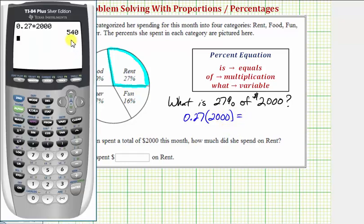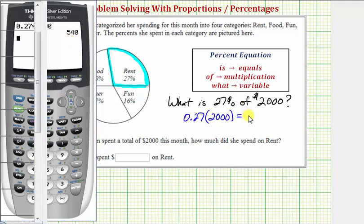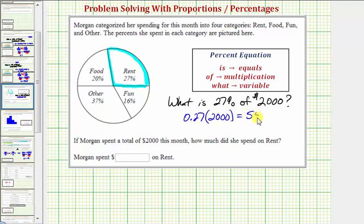Which we can see here is equal to 540, which means Morgan spent $540 on rent.